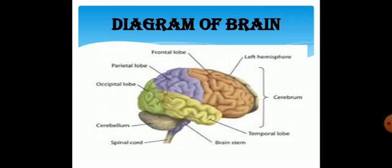And you can also see that cerebrum is divided into four lobes: frontal lobe, parietal lobe, occipital lobe, and temporal lobe. Medulla is also called the brain stem.